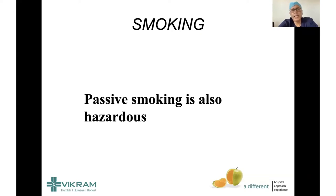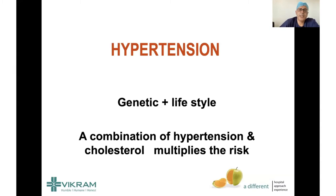Passive smoking is also hazardous, and vaping — non-tobacco smoke — is also bad for the lungs and can cause heart trouble. A patient who is not a smoker may still be a passive smoker, which carries at least 50% of the risk of an active smoker. Hypertension is usually a combination of genetic and lifestyle factors. If your parents are hypertensive, you have a higher chance of being hypertensive. Overweight, smoking, and excess salt intake cause high blood pressure, and if you have multiple risk factors like high blood pressure and cholesterol, the risk multiplies — two plus two doesn't become four, it becomes 22.